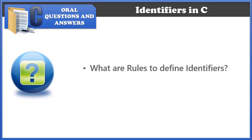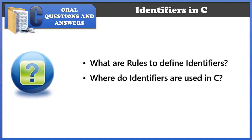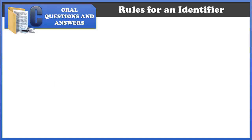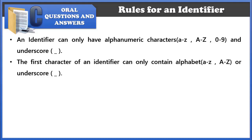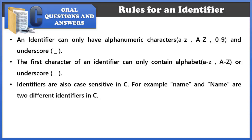What are identifiers in C? There are protocols to define identifiers. First, an identifier can only have alphanumeric characters — small letters a to z, capital letters A to Z, digits 0 to 9 — and the only special symbol allowed is the underscore. Second, the first character of an identifier can only be an alphabet or an underscore; identifiers cannot begin with a digit. Third, identifiers are case sensitive.